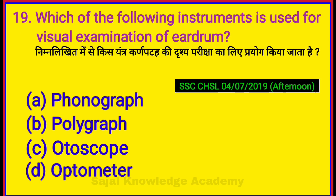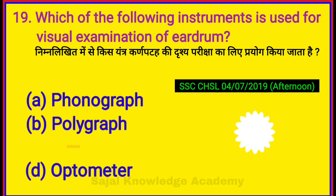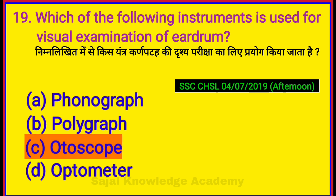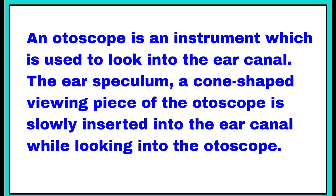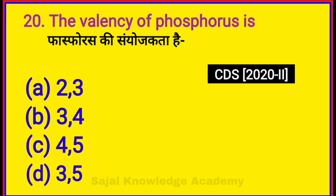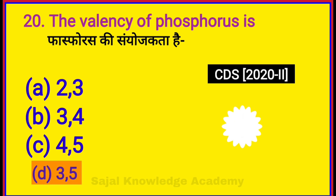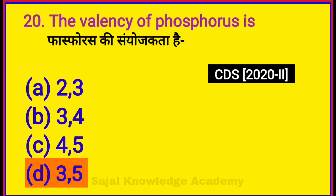Which of the following instruments is used for visual examination of the eardrum? Option C: Autoscope. The valency of phosphorus is? Option D: 3 and 5.